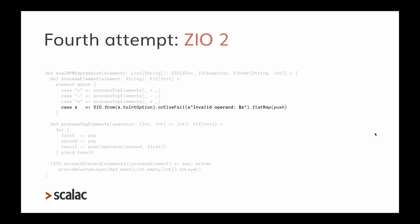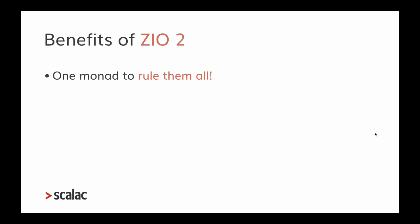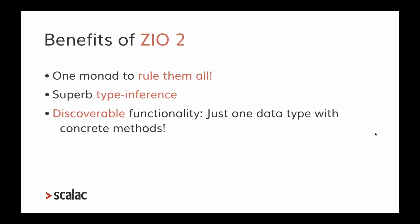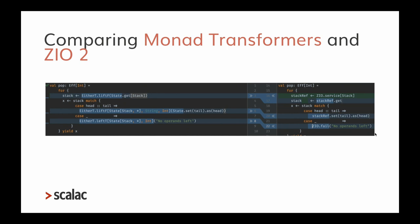The benefits of ZIO 2 are that it's just one monad to rule them all — all effects in one data type — with superb type inference and discoverable functionality. You don't need to know about monad transformers or type classes. Comparing the monad transformer solution with the ZIO 2 solution, ZIO 2 is far easier to understand with no awful type annotations.